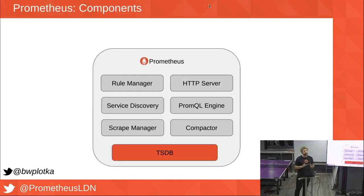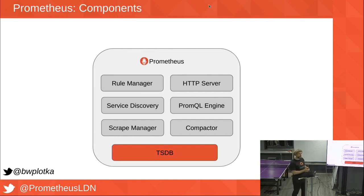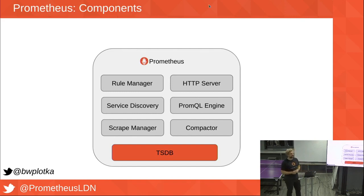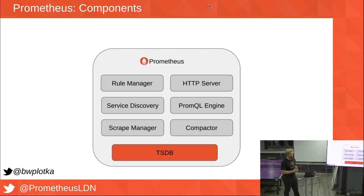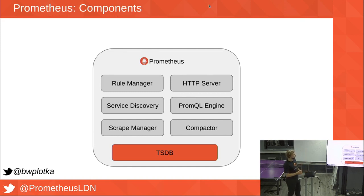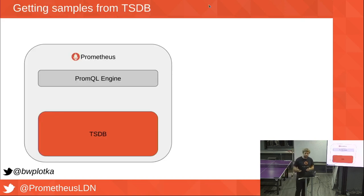This is a fairly technical deep dive, but I'll try to make it as lightweight as possible. Prometheus is a very powerful binary that is simple and doesn't allow many extensions right now — that simplicity is key to why it's so popular. In this talk I'll focus on two of its components: TSDB, the time-series database for Prometheus, and the Prometheus engine, because those two are used for the read path.